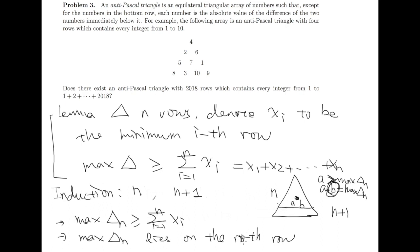Now we can perform the induction. If the number lies on the nth row, there necessarily are two consecutive numbers lying below it. Using the same argument, we have a minus b equals max delta_n, which means a is larger than max delta_n plus b.